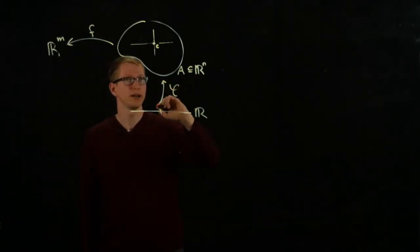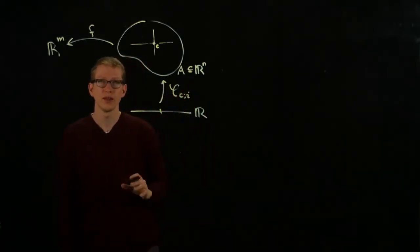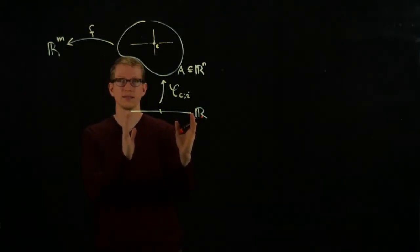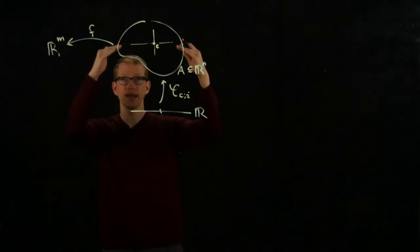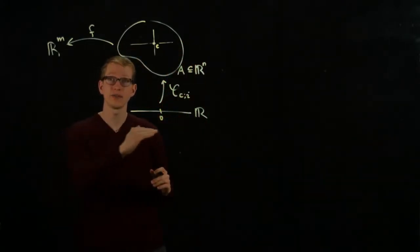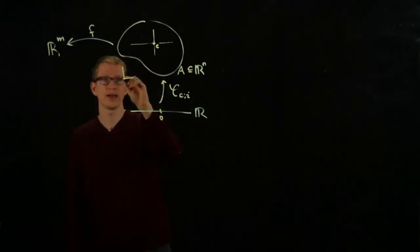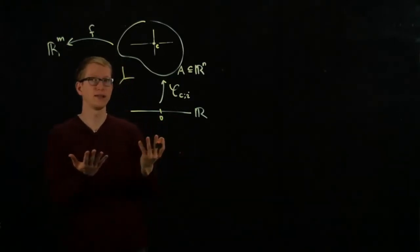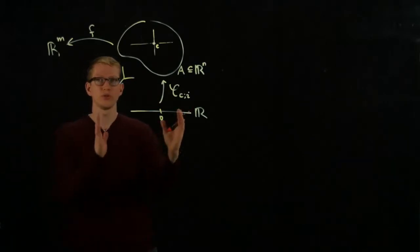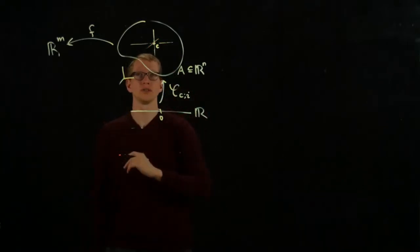We have a function from R, or some subset of R, which we'll denote by φ_C,i. This function is going to take this axis and essentially place the axis whose origin 0 lies at C in the i-th direction. We're shifting that coordinate basis over here.